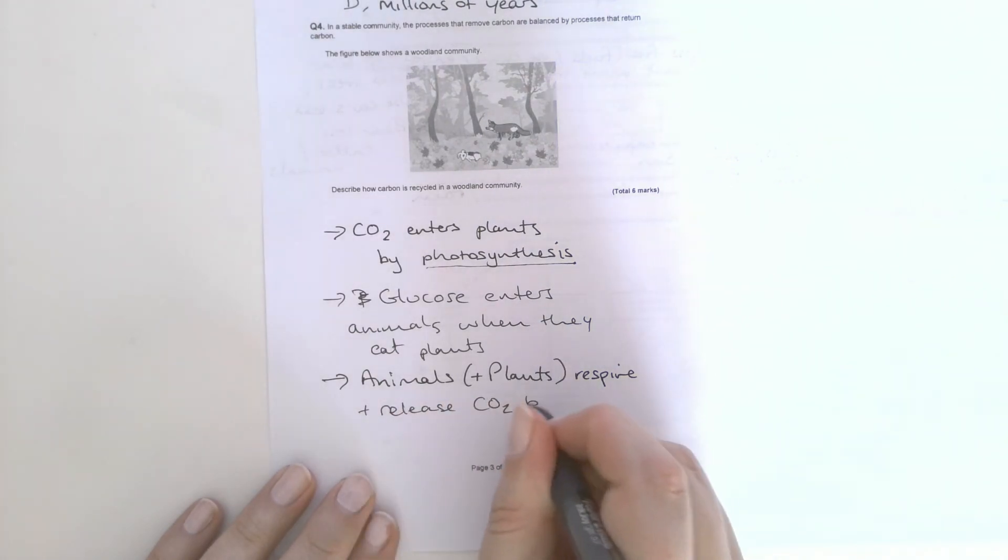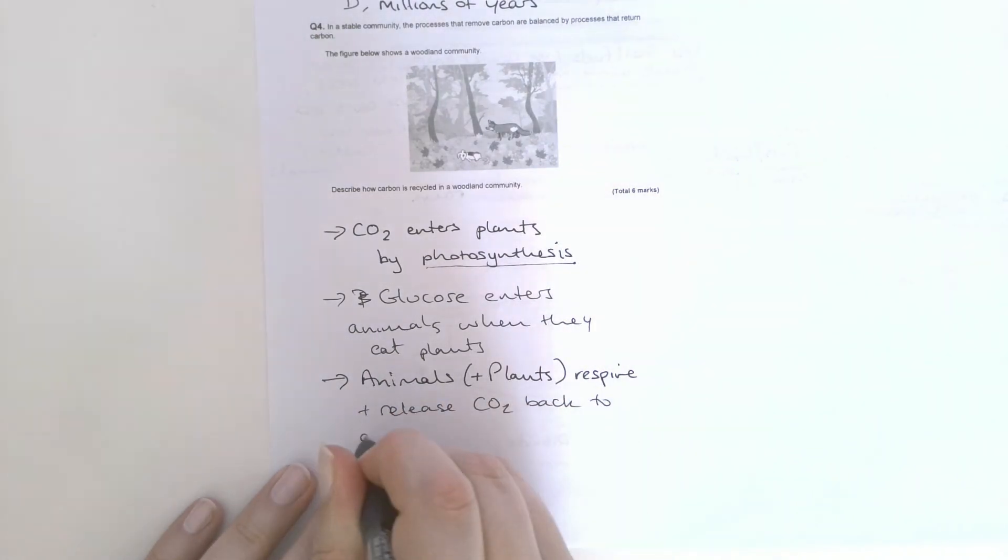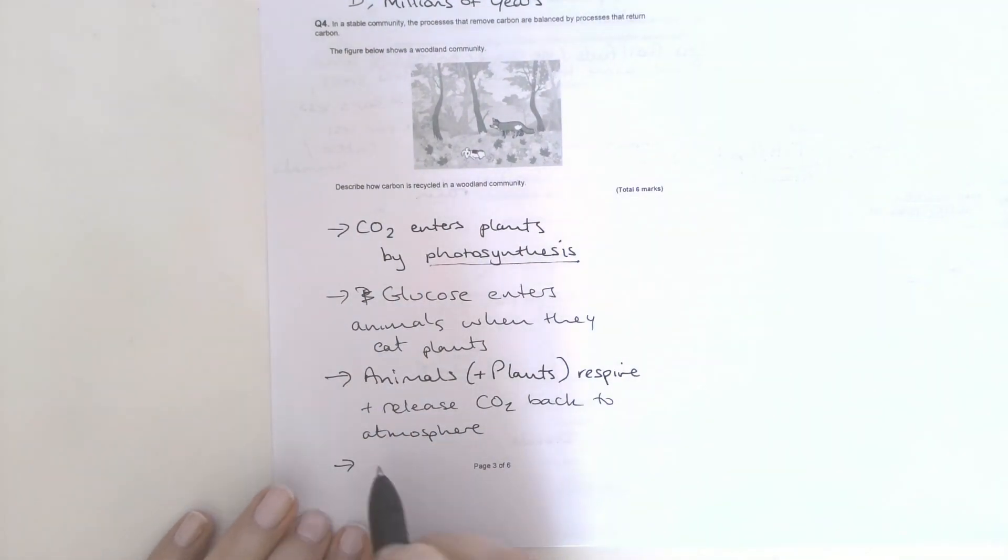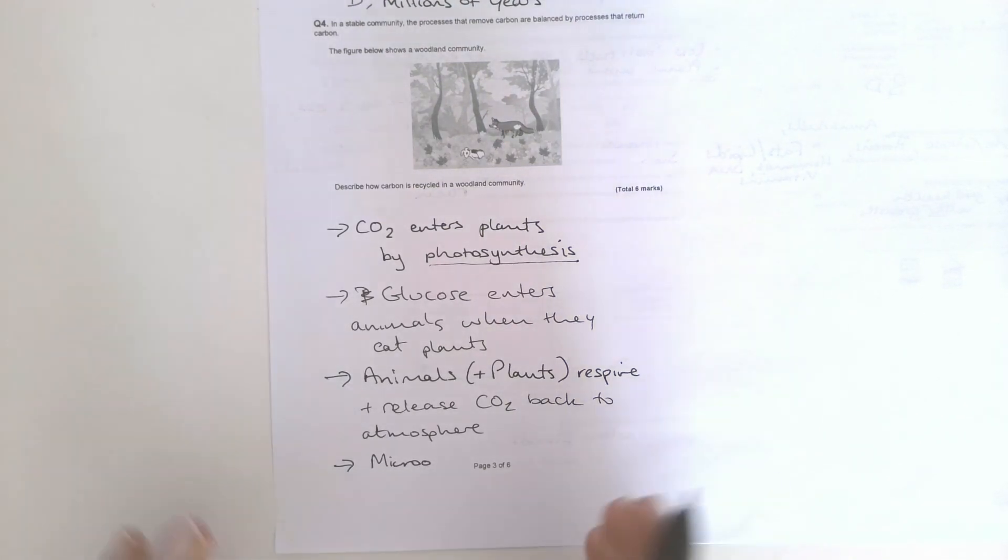And release CO2 back to atmosphere. And then also when they die, microorganisms... again, some of you were saying that the dead material respires. Well, they're dead, they can't respire anymore. It's the microorganisms, but that's one of the trickiest bits of the carbon cycle: remembering that it's the microorganisms that respire as well.